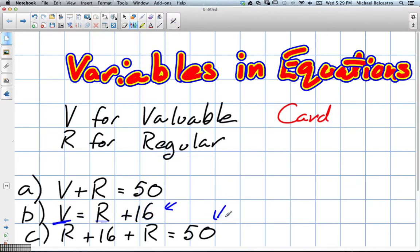And then the last one, what does it say? R plus 16 plus R equals 50. Which means? Regular cards plus 16 plus regular cards equals 50. Very good.